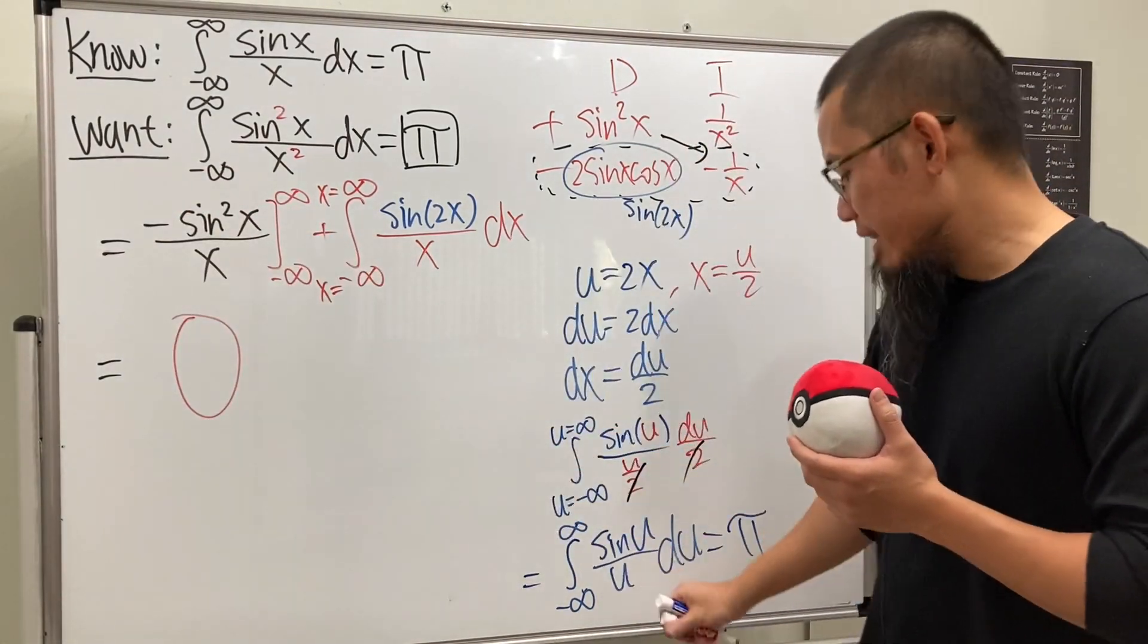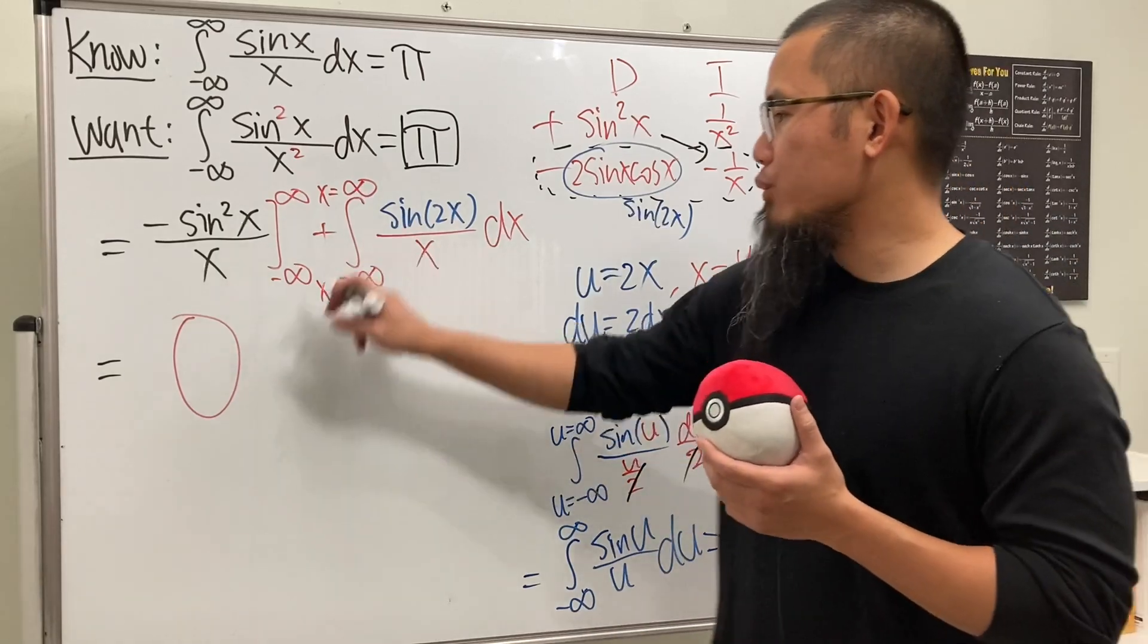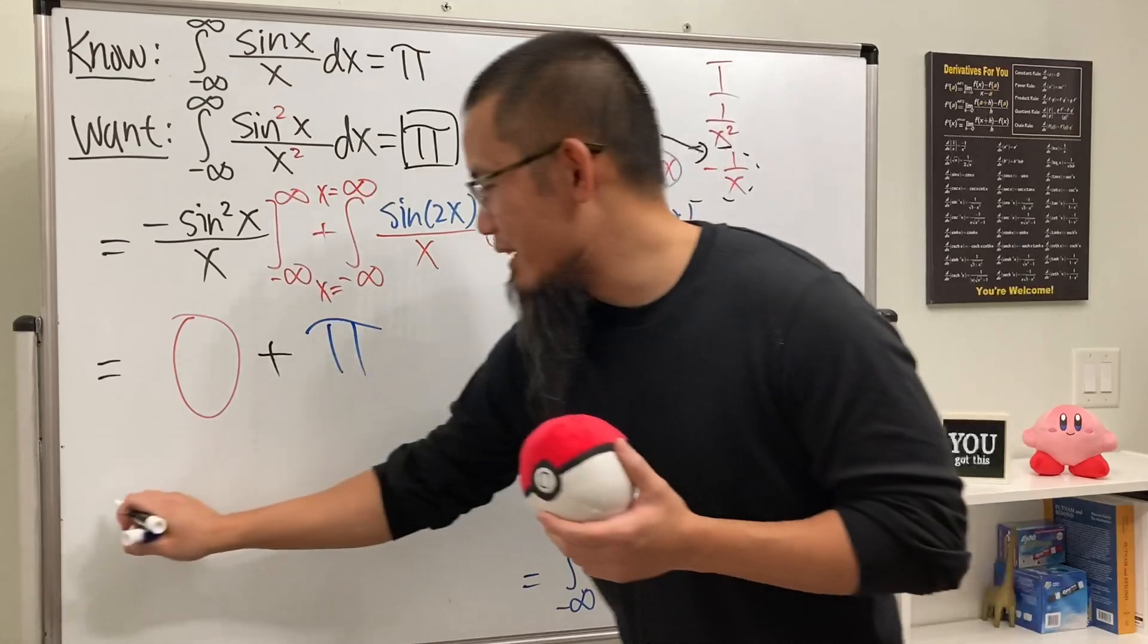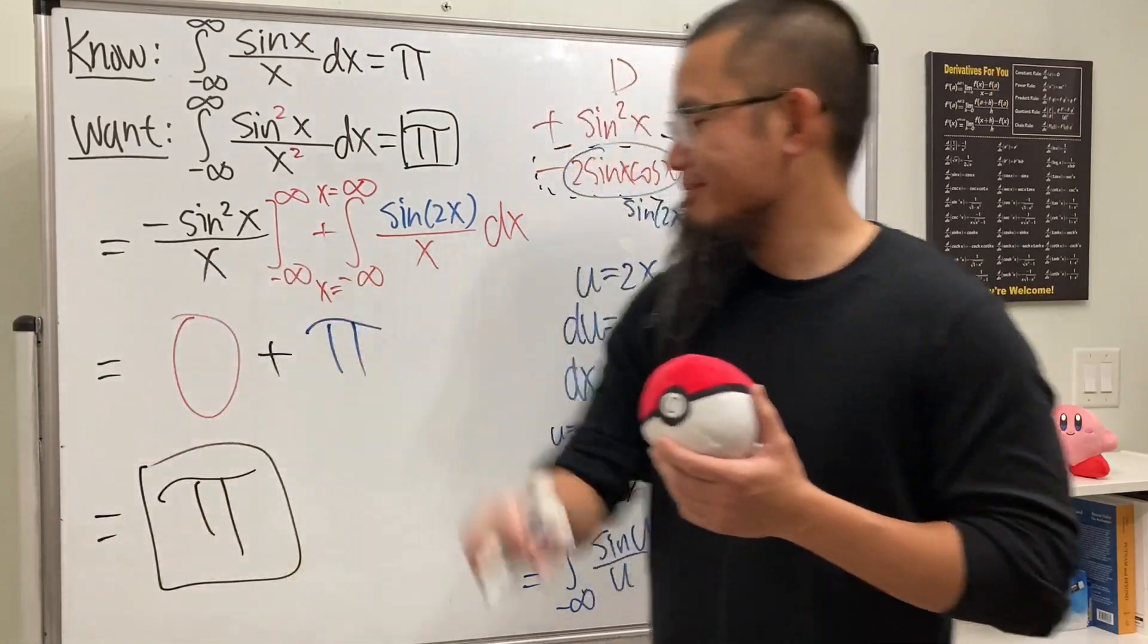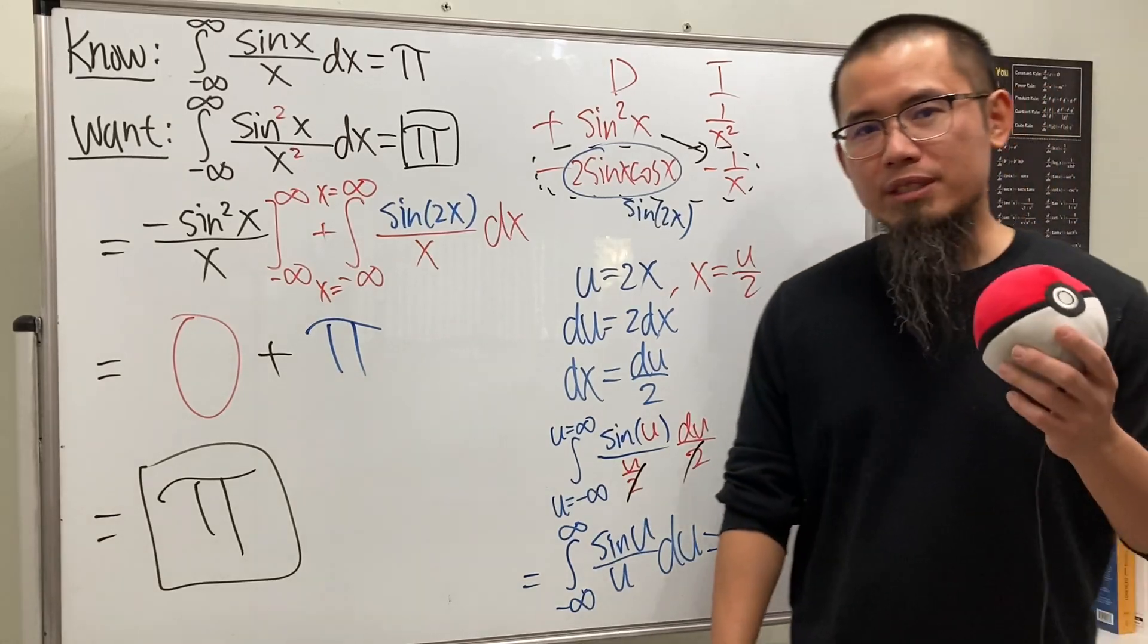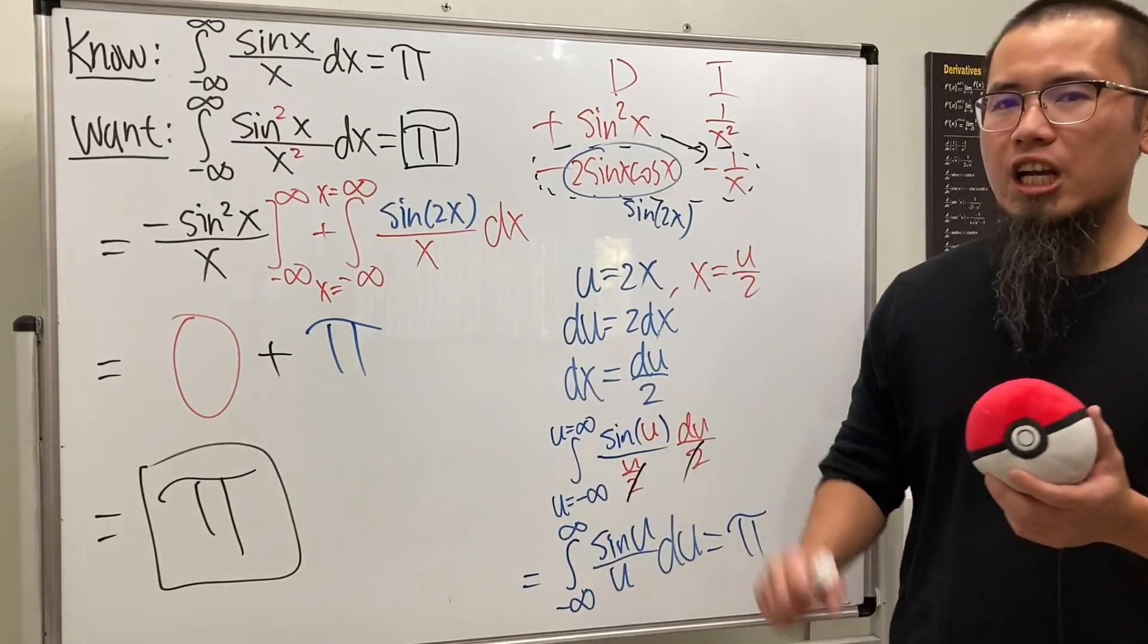The first part is zero and then the second part is just that. We will have to add the π, so altogether the answer is just nicely equal to π, just like that. So let me know what you guys think, and if you guys would like to see more integrals like this, check out my other videos.